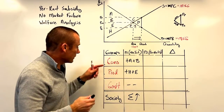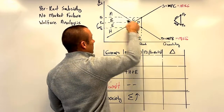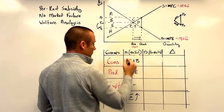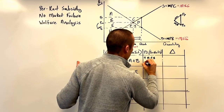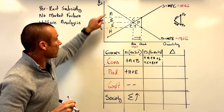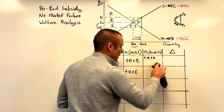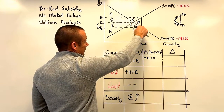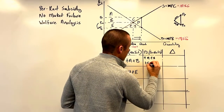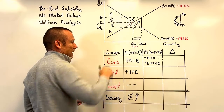Under the per unit subsidy, the big thing for the consumer is Pc going down. The consumer surplus is the area between the marginal private benefit curve and Pc out to Q-subsidy — that gives us areas a, b, e, f, and g. Note: area c is not inside that region between MPB and Pc, so it doesn't count.